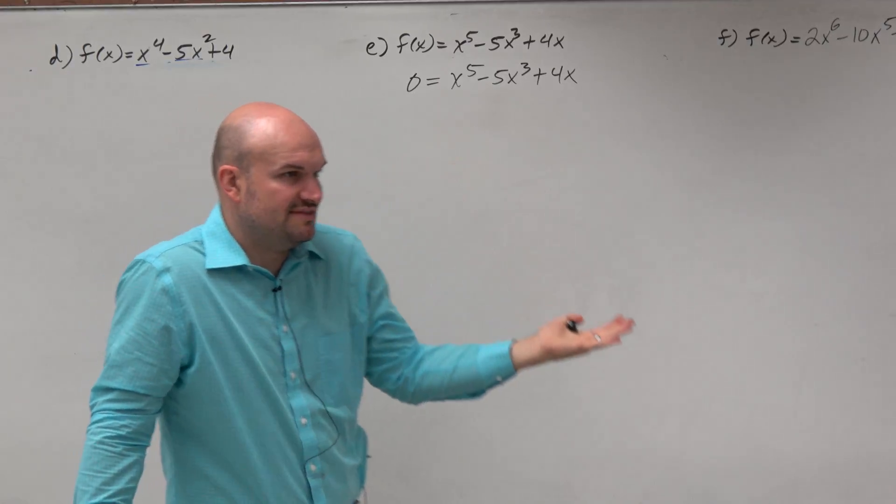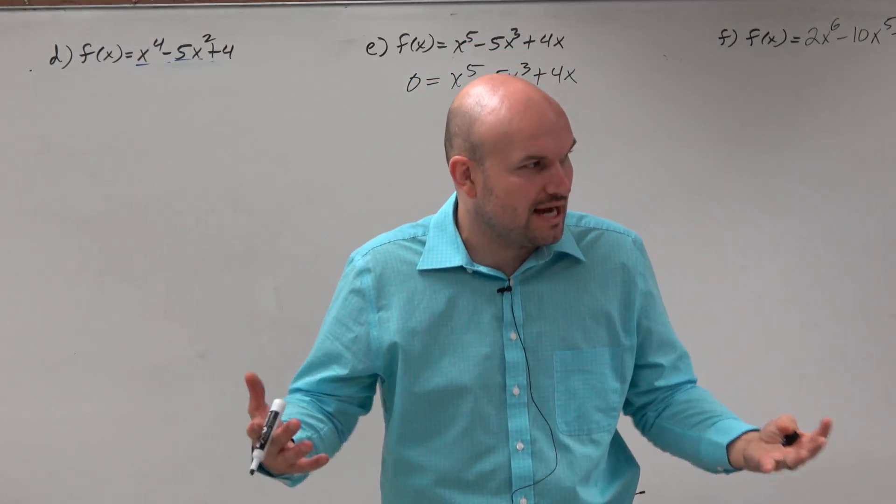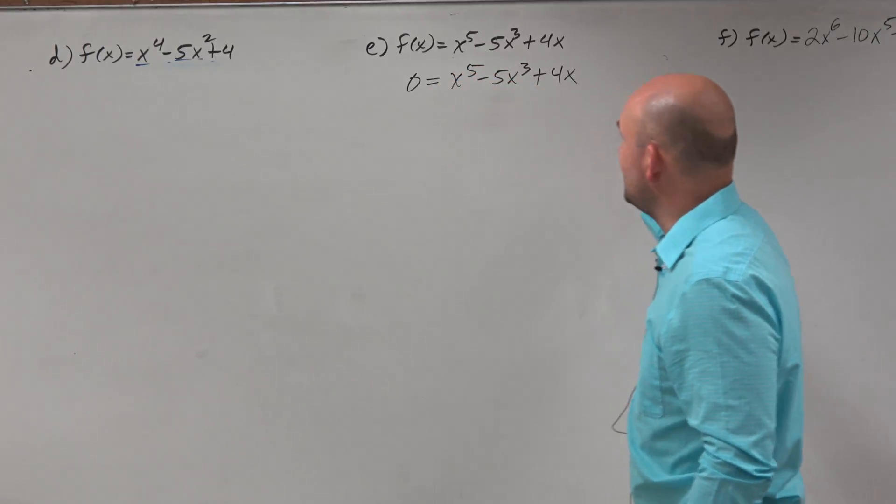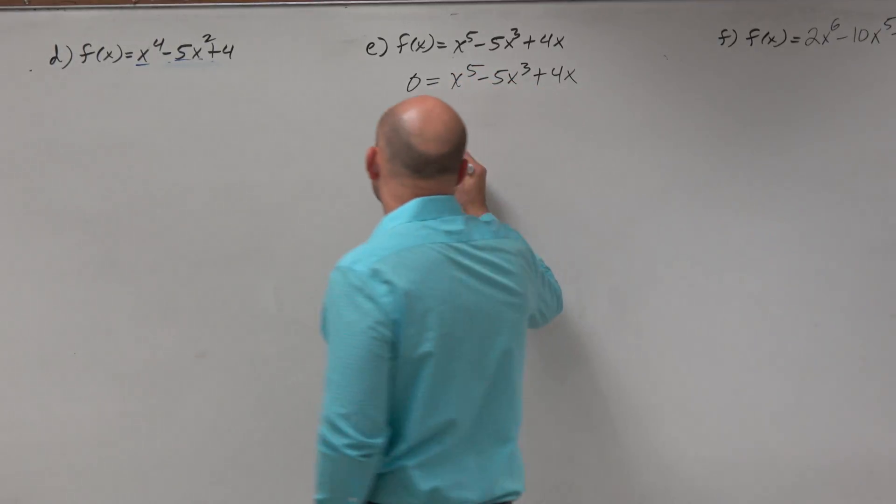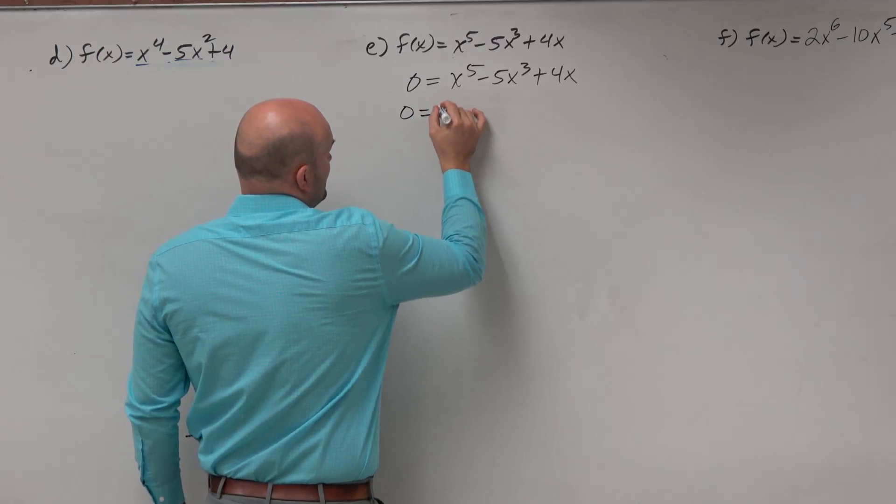And then the next step is let's factor out common terms, because I think that's the easiest type of factoring that we can start with. And again, you guys can see this is an example where they all share an x, so we factor out an x.